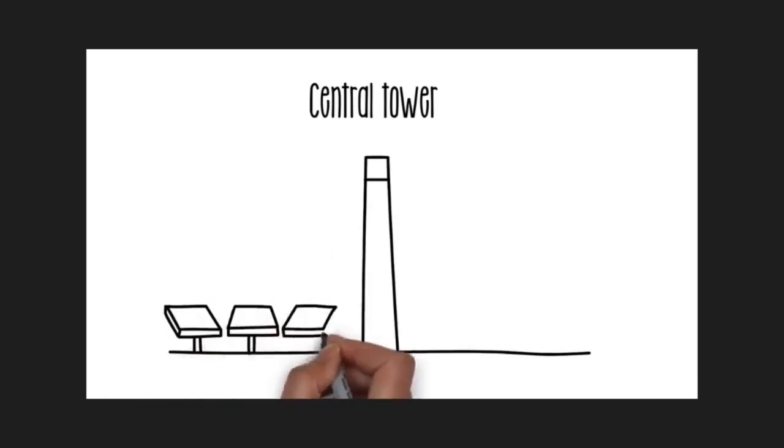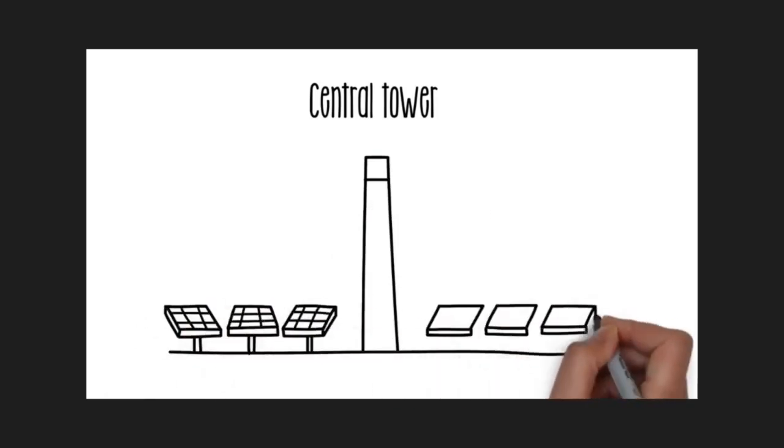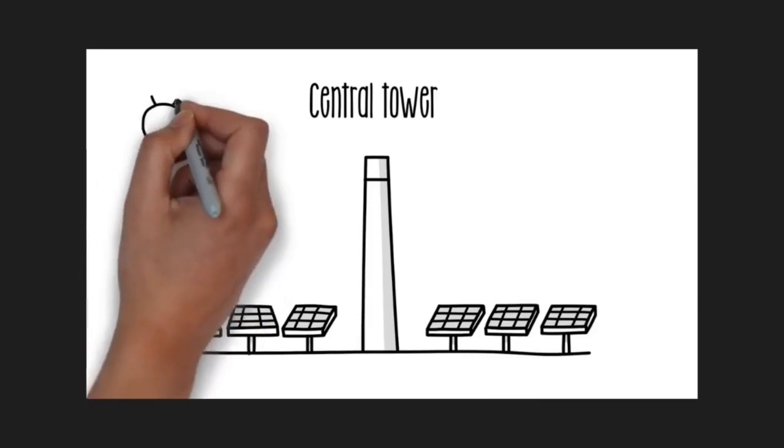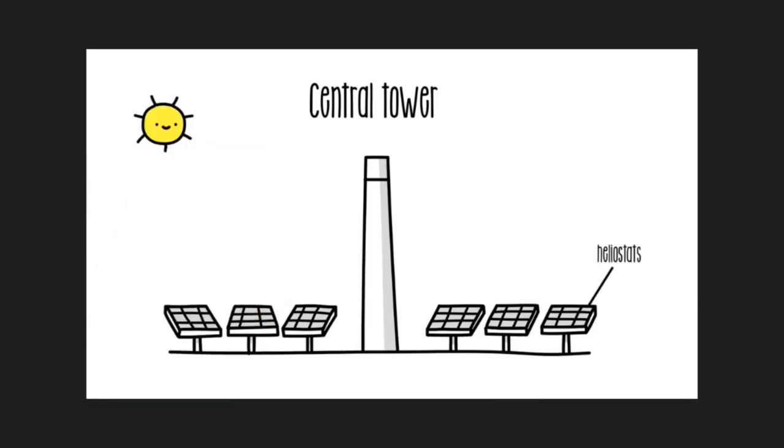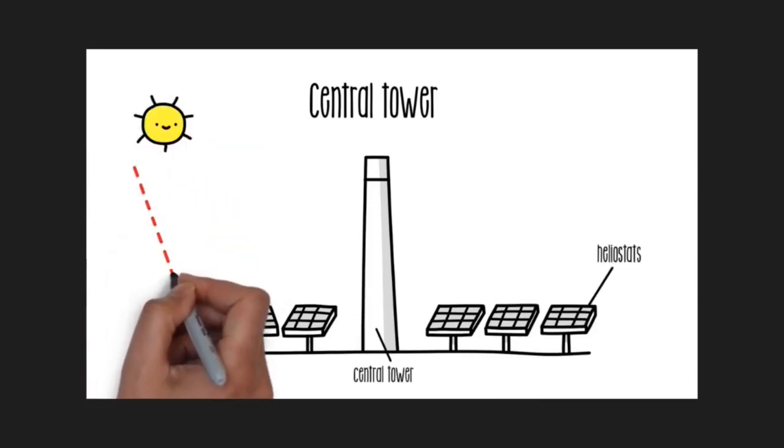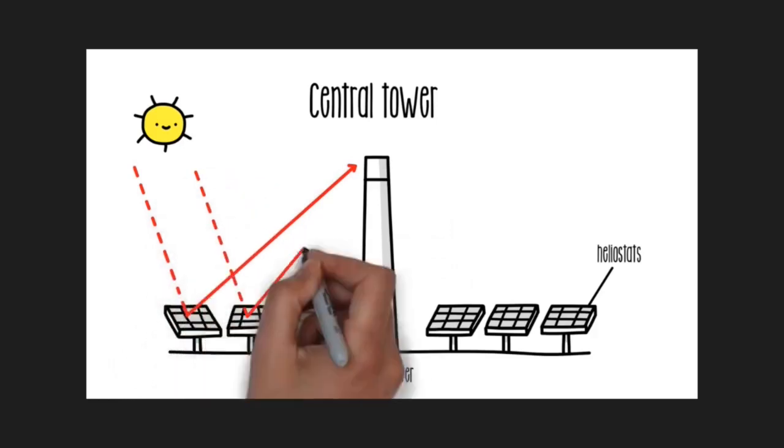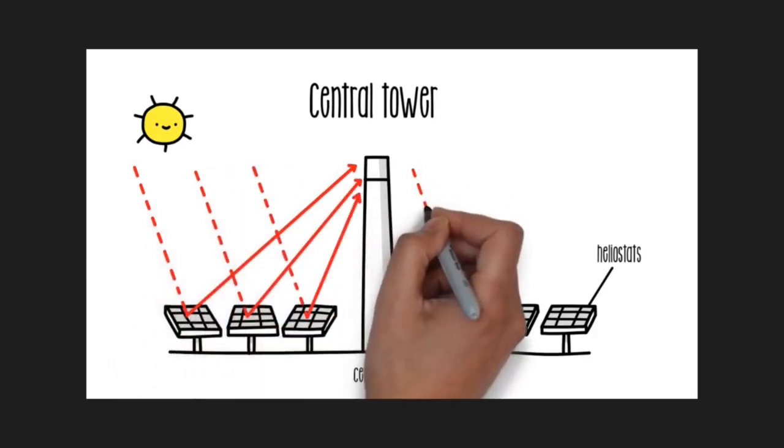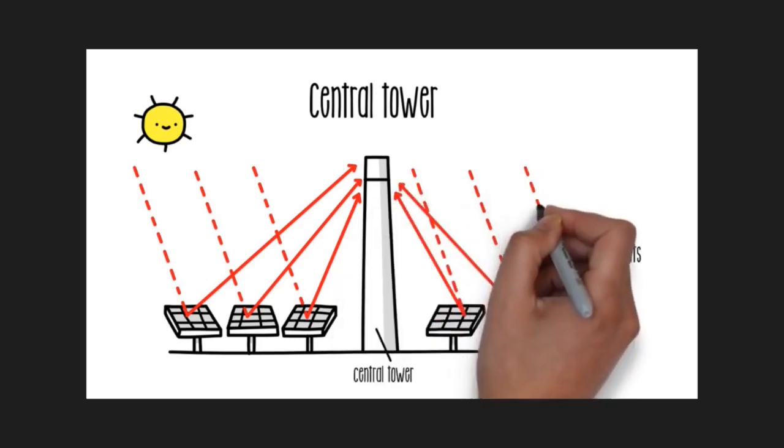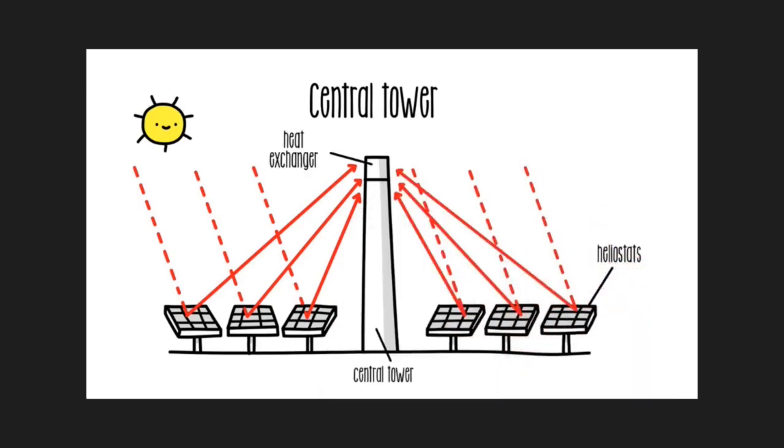Central tower technology concentrates the radiation at a point and requires no fluid circulating in the solar field. These facilities have a field of heliostats - flat mirrors that reflect the radiation onto a central tower with heat exchanger located at the top. The mirrors can be oriented according to the position of the sun. With this technique, temperatures of 600 degrees Celsius are reached.